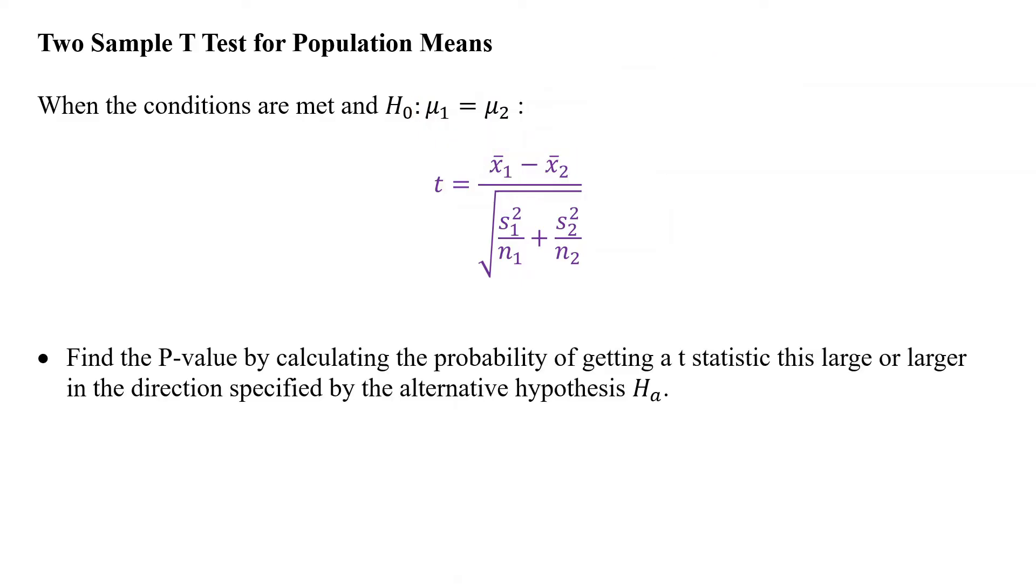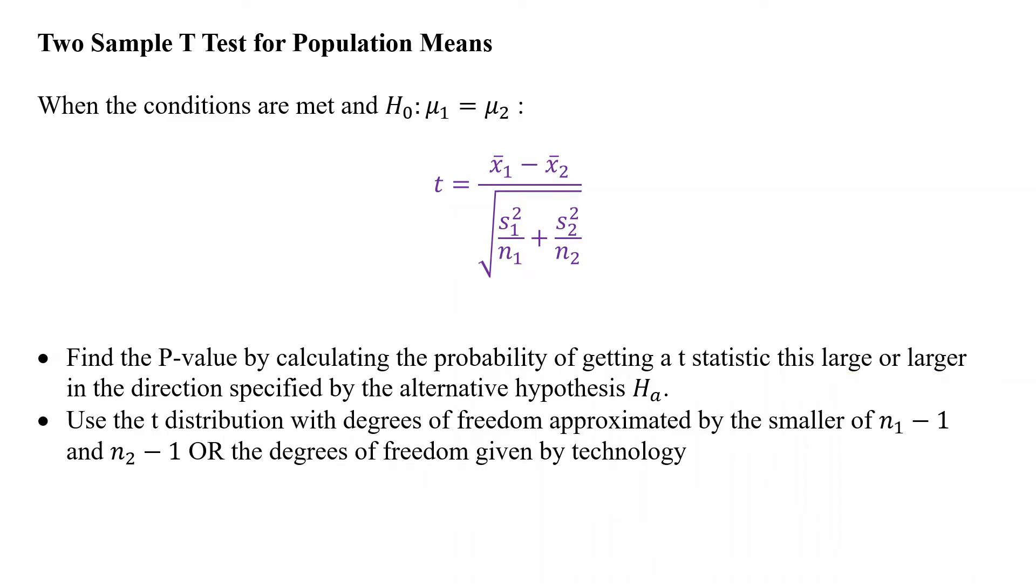So you're going to have your subtraction of your statistics. Usually it's minus your parameter value, which is zero, so it's not written here in the formula. And then we divide by our standard error. We find the p-value then by calculating the probability of getting this test statistic this large or larger in the direction of the alternative. So I say this large or larger, but it's probably more appropriately described as this extreme or more extreme. We use the t-distribution with degrees of freedom. Remember, we can do degrees of freedom two ways. We can do the smaller degrees of freedom based on the sample sizes we have, or we can report the degrees of freedom given by technology. We're going to go over that technology bit in note six.